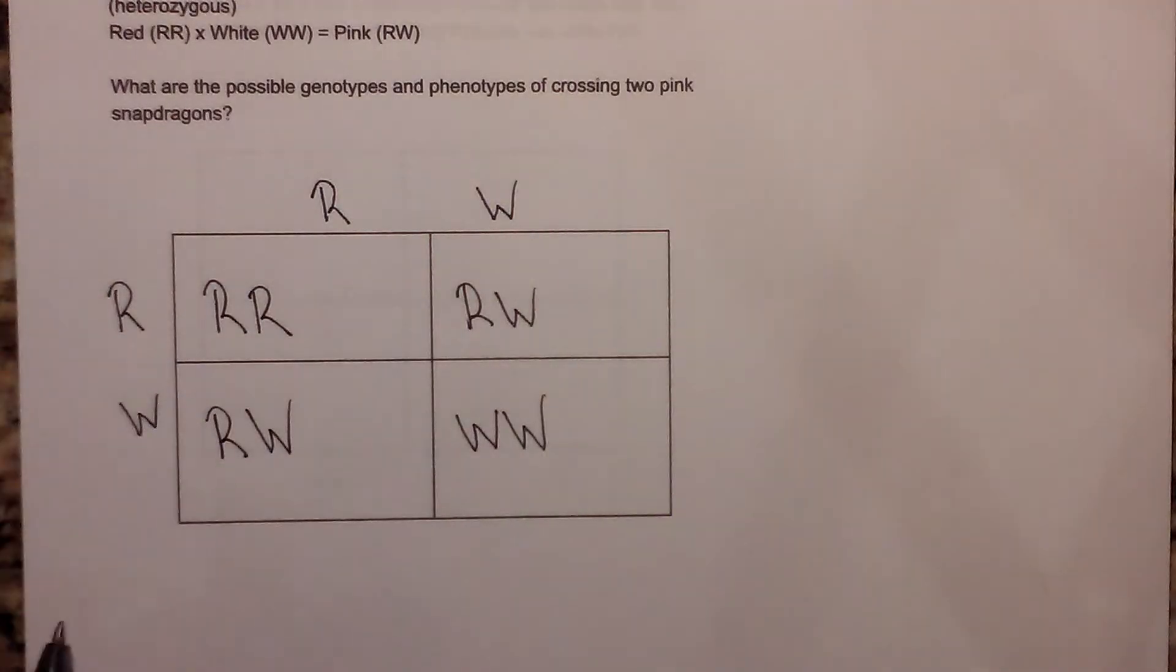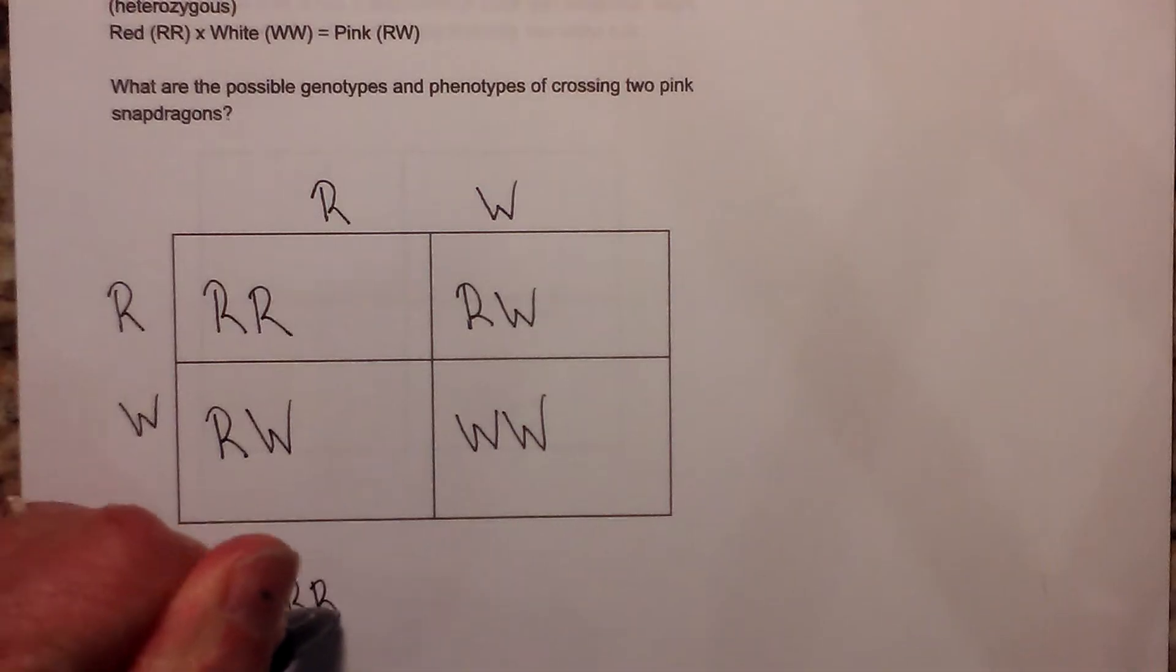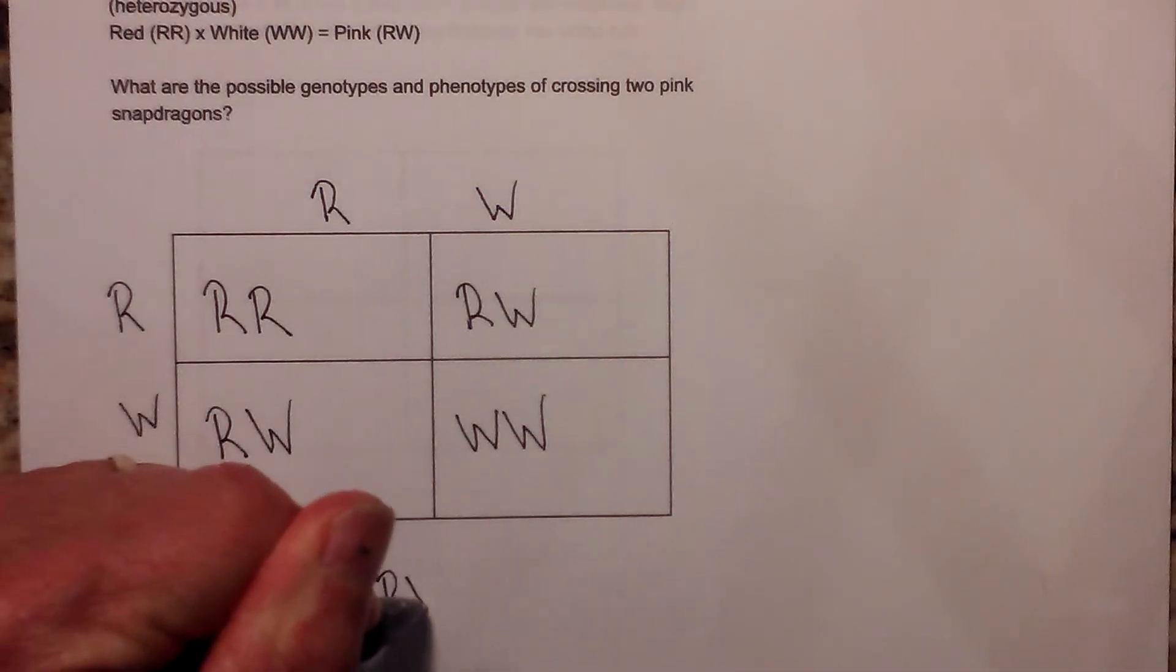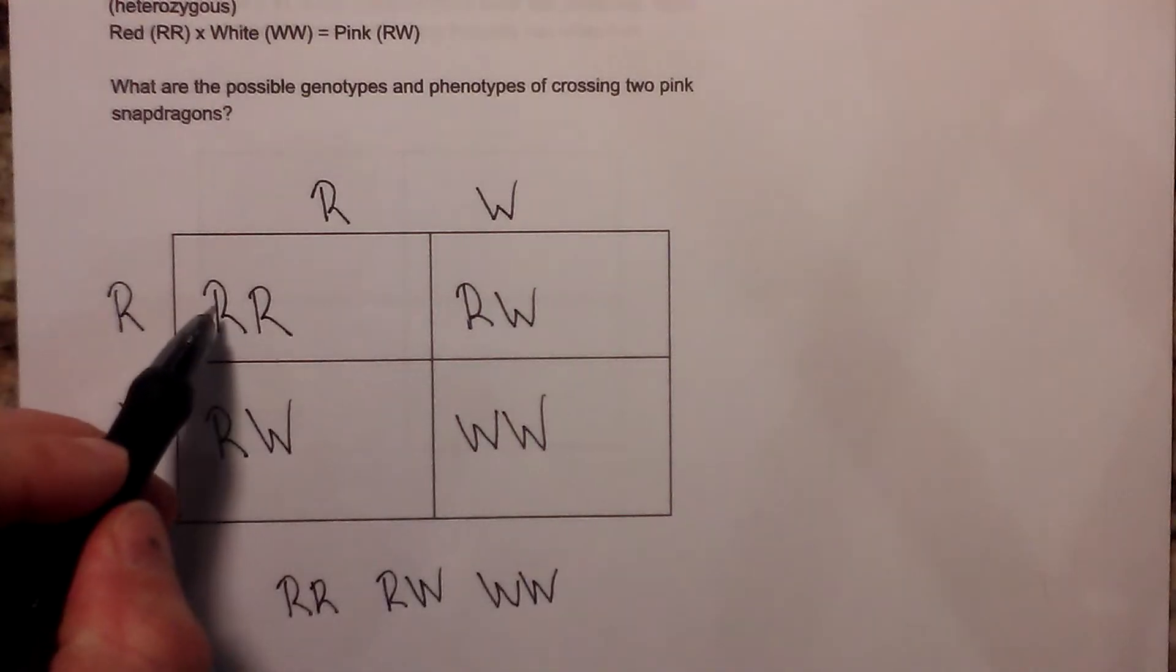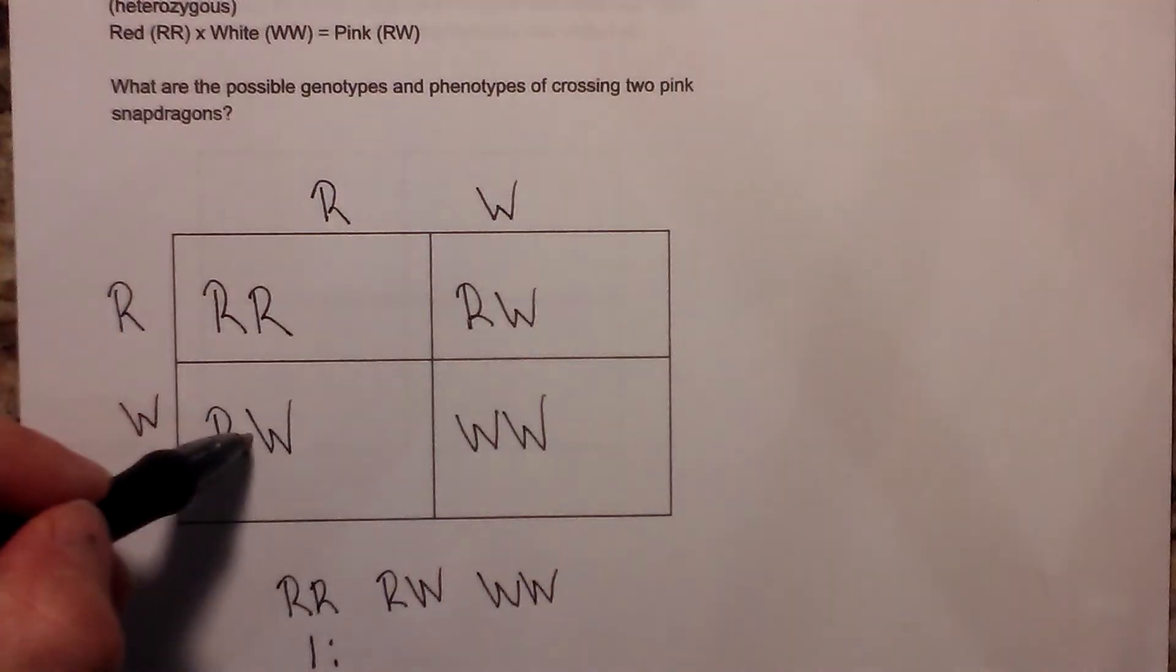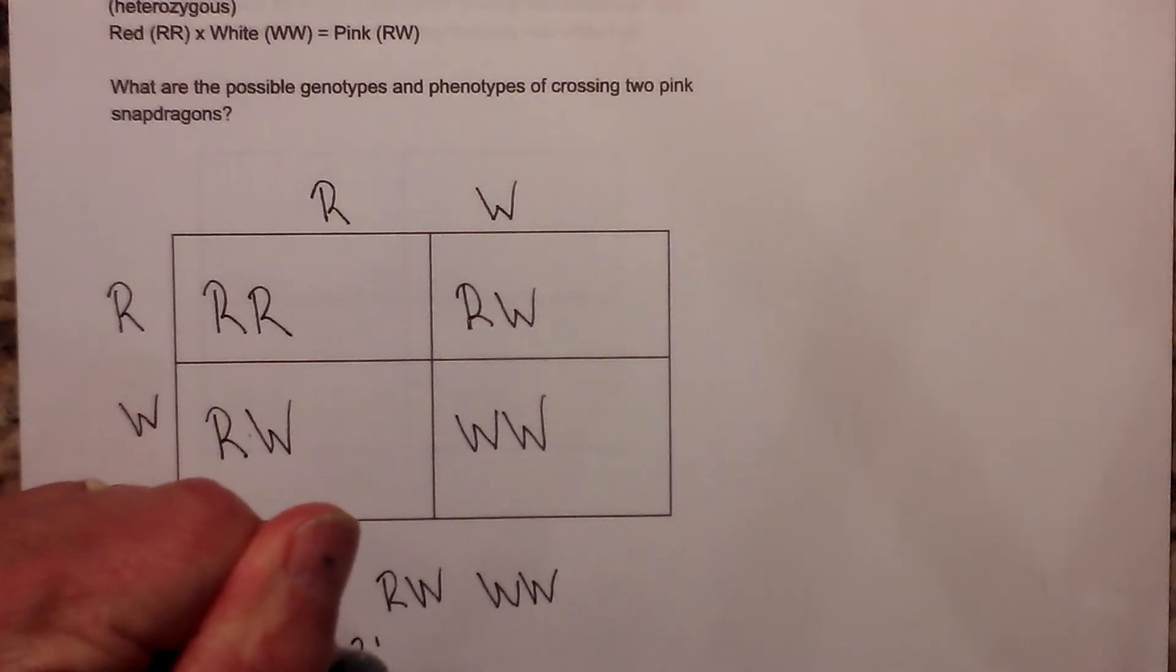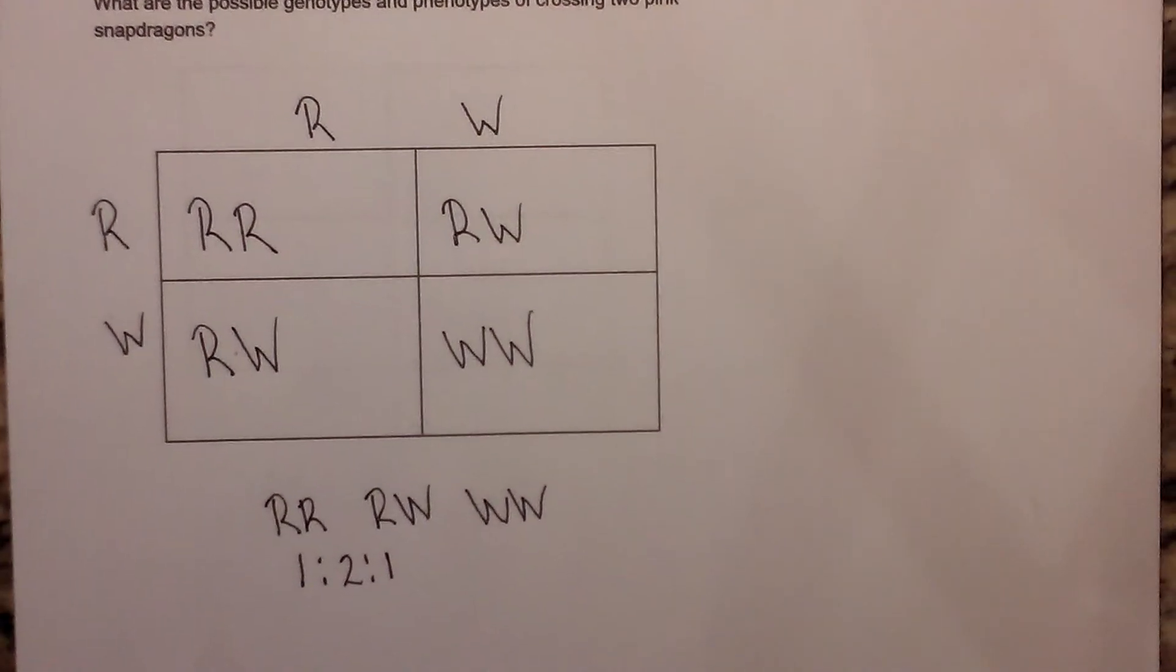Now let's see what we get. First let's write the ratio of the genotype. We're going to have RR, RW, WW. For RR we have one, for RW we have two, and for WW we have one. So we have a one to two to one ratio.